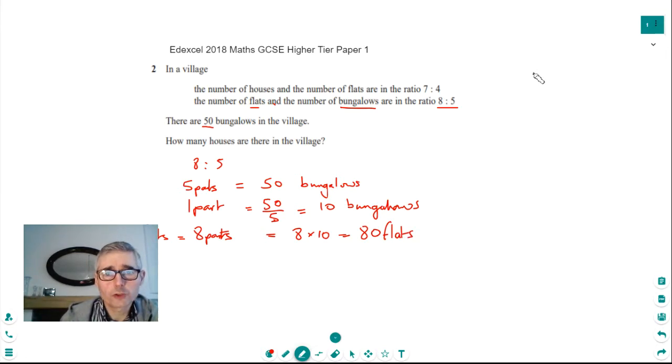We can then look at the first ratio that we're given. So the ratio of houses, so I represent that as an H, to the number of flats is equal to 7 to 4. And the other thing we know is we've just worked out that there's 80 flats in that village. So we can say that 4 parts in this second ratio is equal to 80 flats.